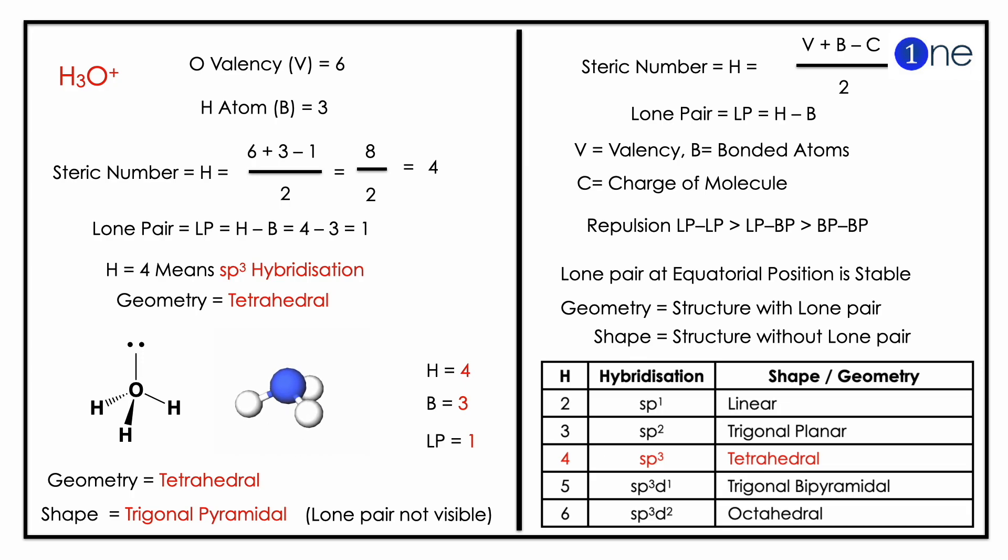You have 4. Four means sp3 hybridization with tetrahedral form. And you have geometry of tetrahedral, but you should know the lone pair.